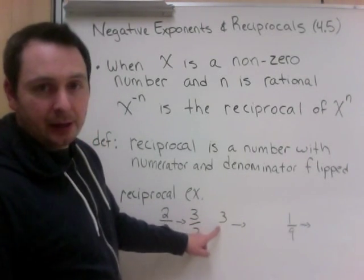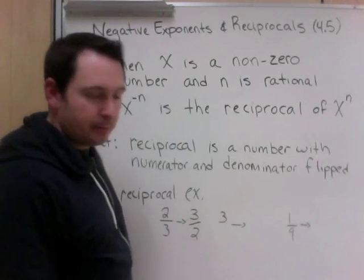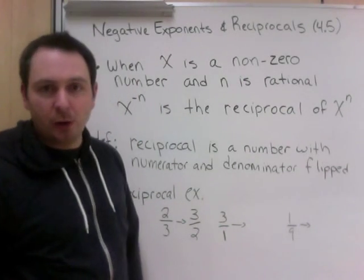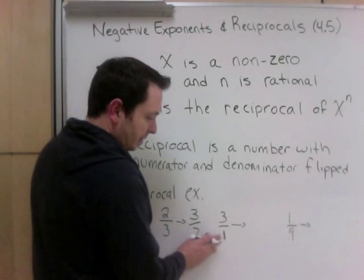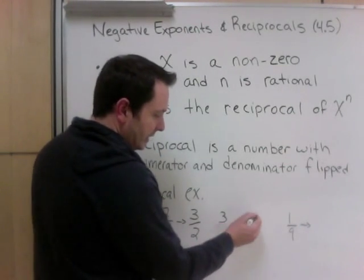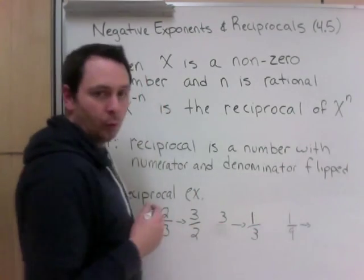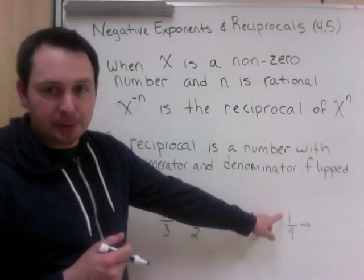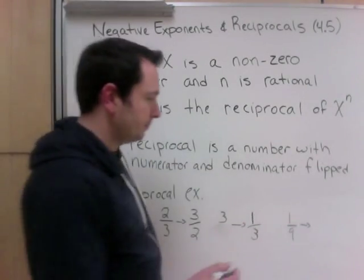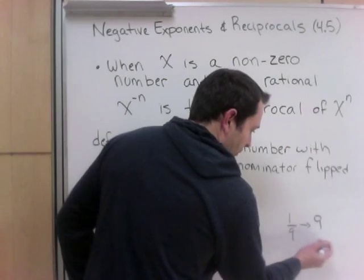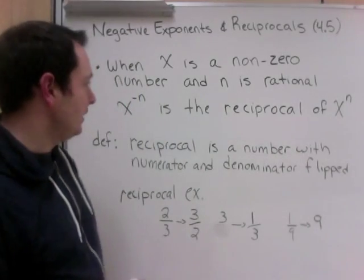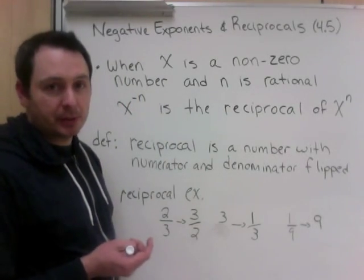3. Now it doesn't look like it's a fraction, but any number is a fraction if you put it over 1. So the reciprocal of 3 is 1 third. The reciprocal of 1 ninth, flip it. 9 over 1 is 9. So that's how you deal with reciprocals.